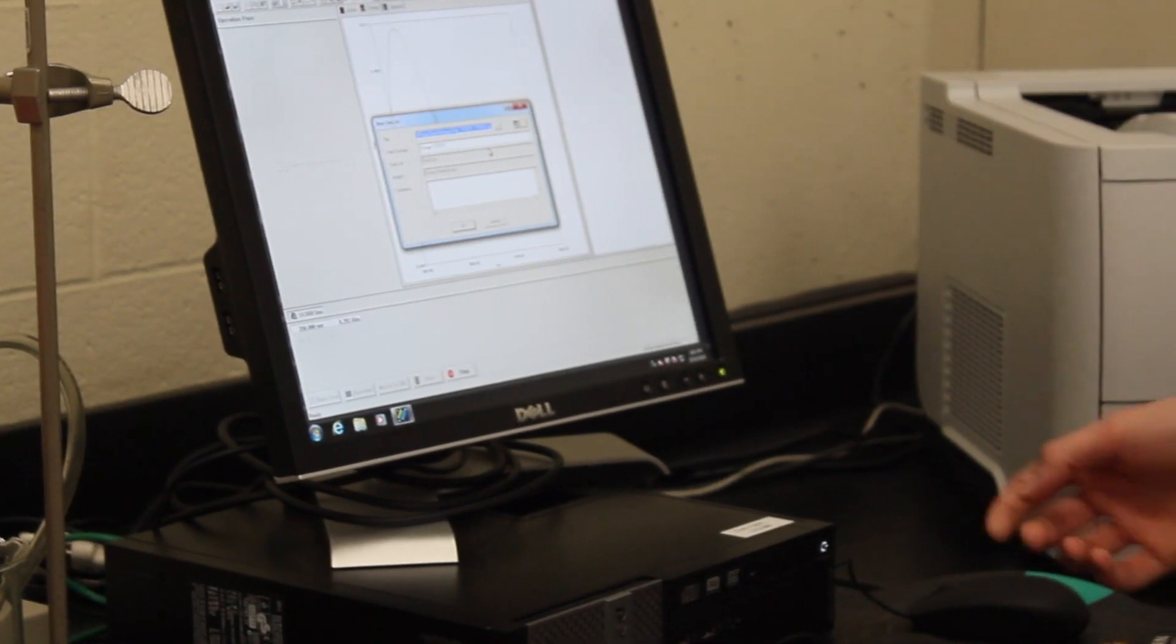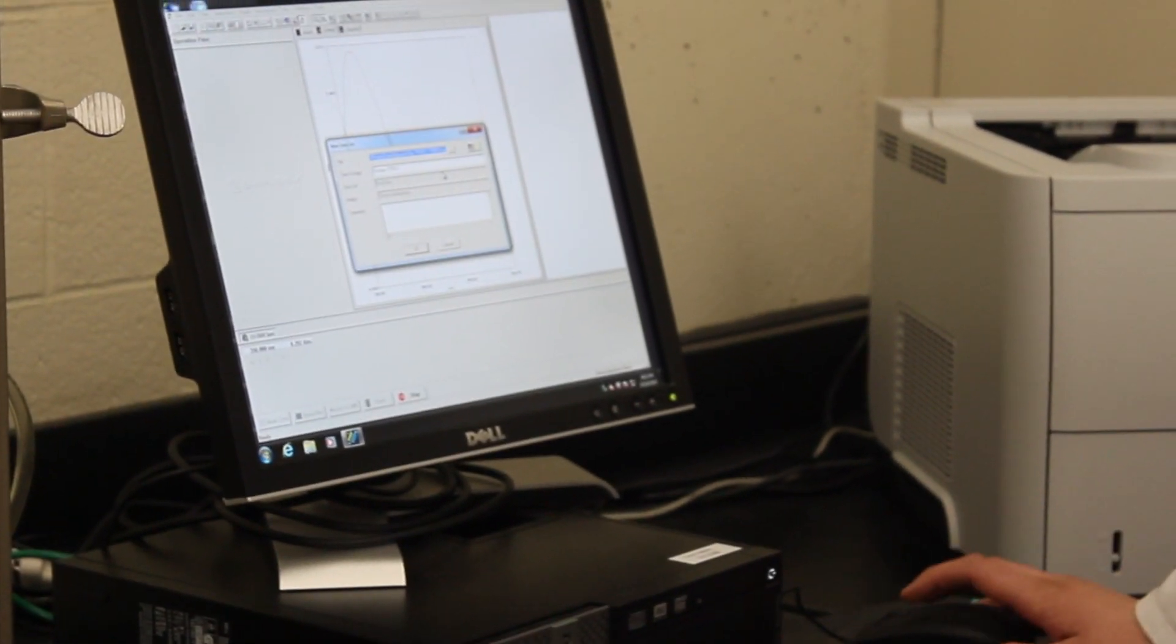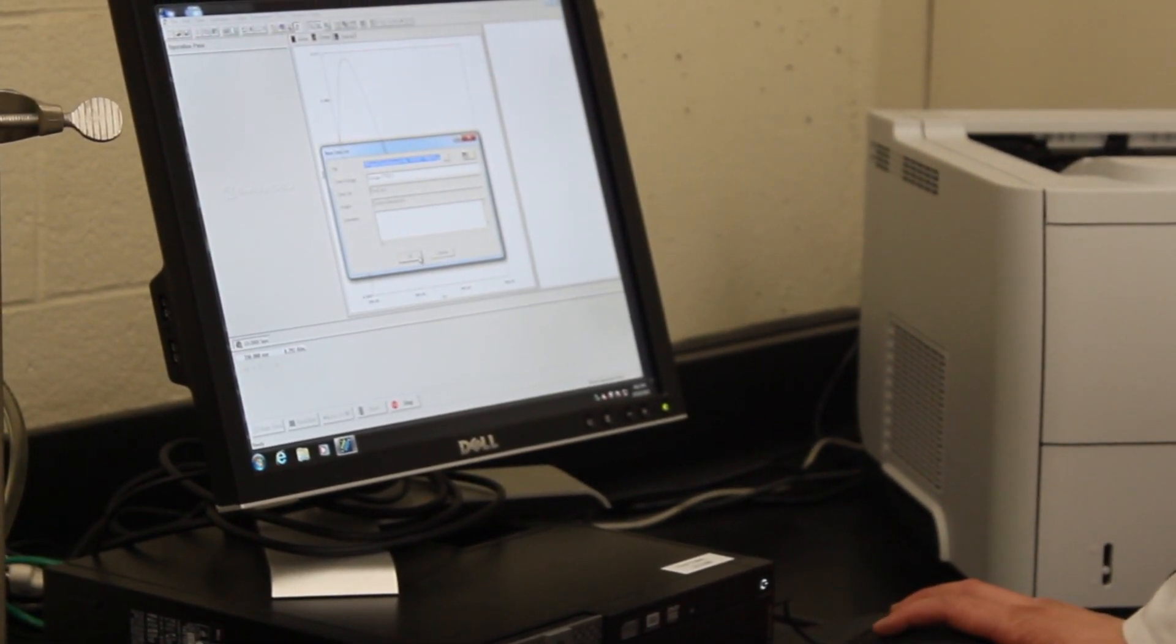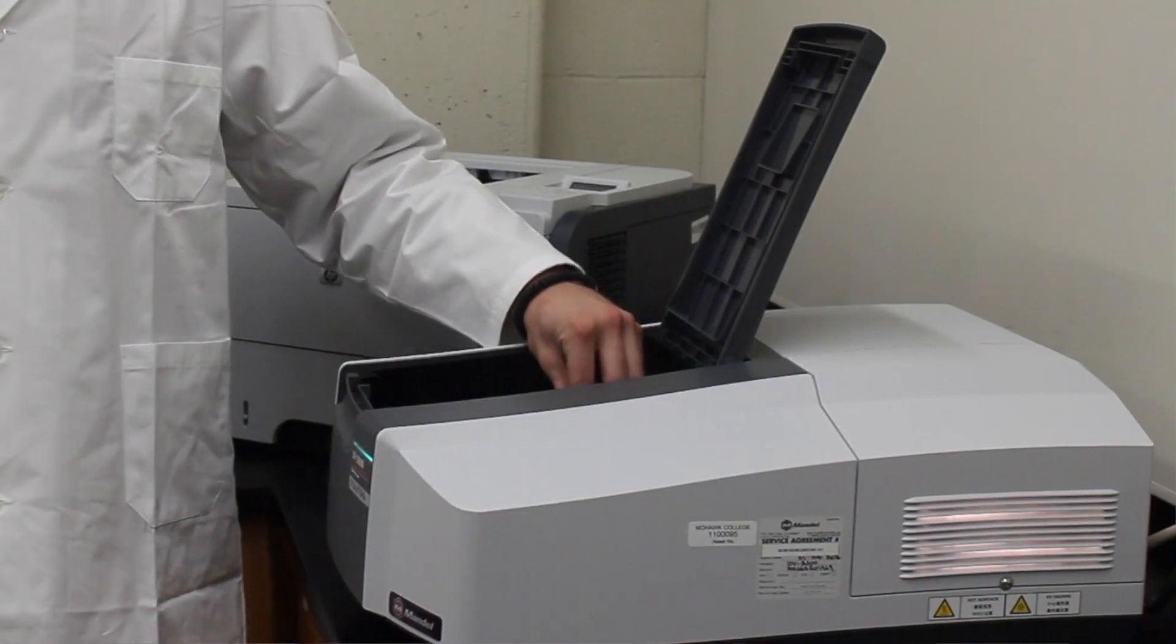This machine is called a UV-vis spectrophotometer. Basically, this machine can analyze samples using ultraviolet and visible light. Ultraviolet light is just above our visible spectrum that we can see with our naked eye.